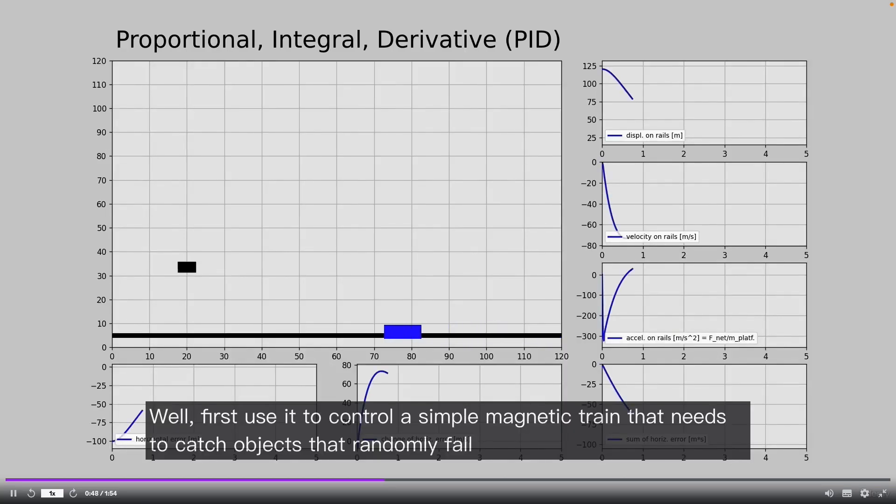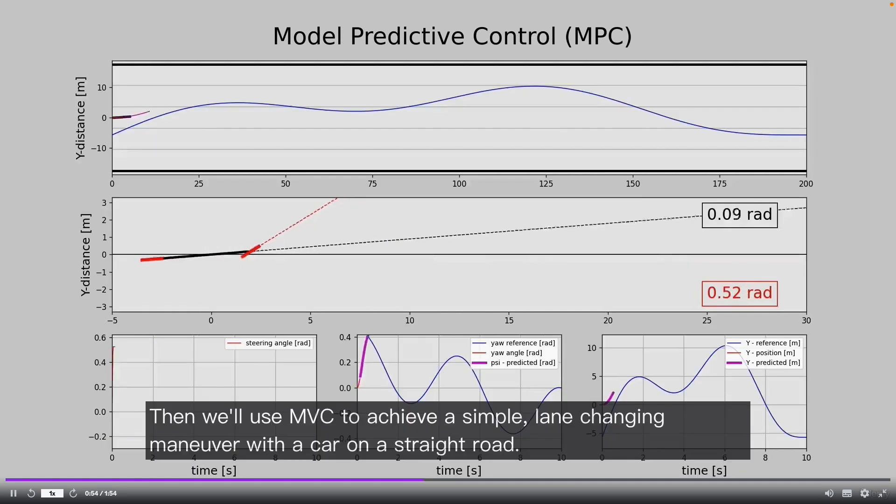We'll first use PID to control a simple magnetic train that needs to catch objects that randomly fall from the sky. Then we'll use MPC to achieve a simple lane changing maneuver with a car on a straight road.